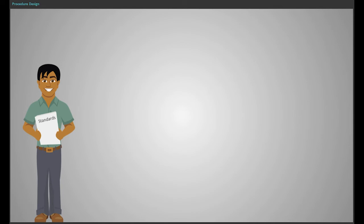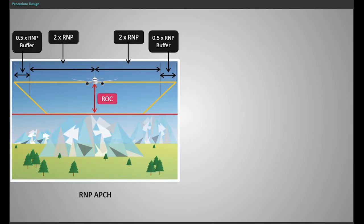RNP approach, RNAV GNSS obstacle clearance corridor uses a trapezoid shape, similar to ILS, including a buffer area.